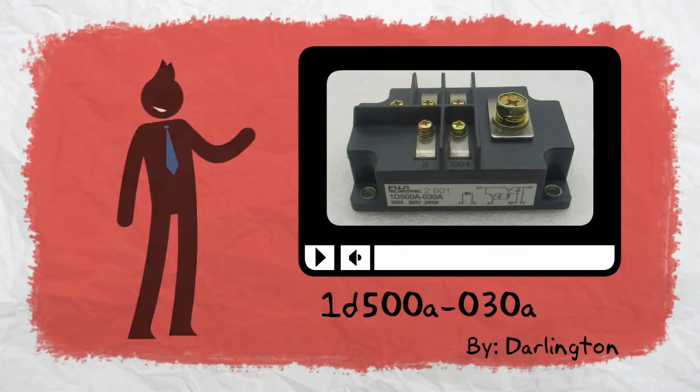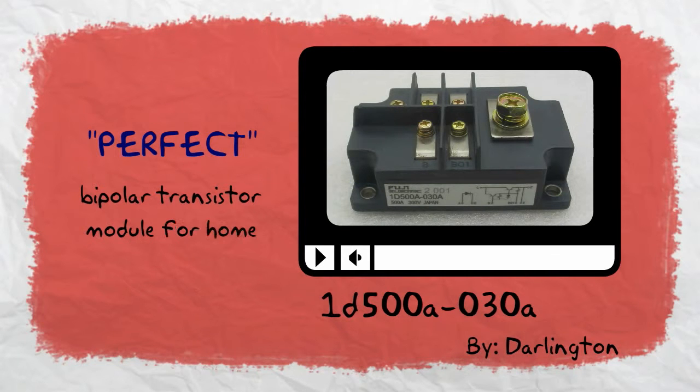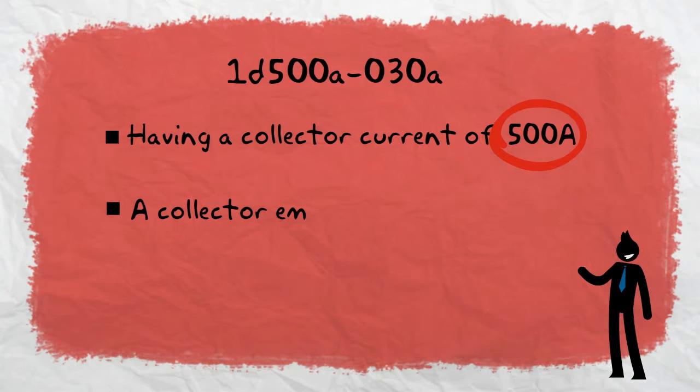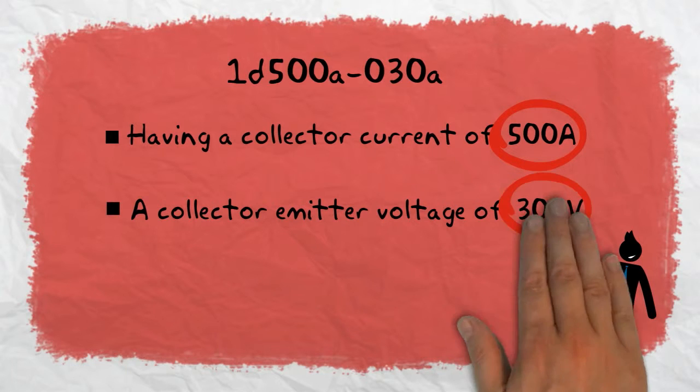1D500A030A by Darlington is a perfect bipolar transistor module for home appliances. Having a collector current of 500 amps and a collector-emitter voltage of 300 volts,